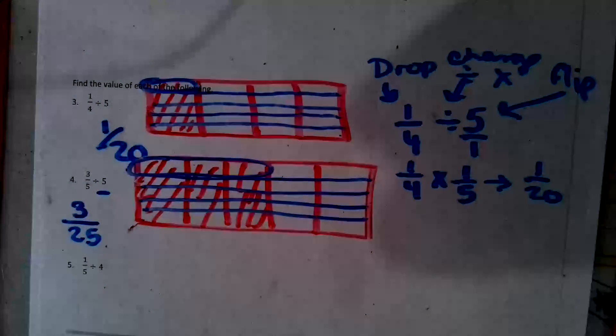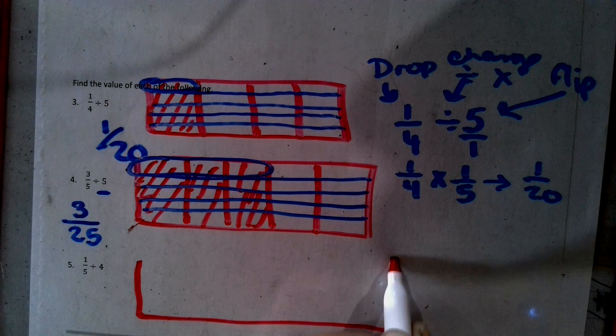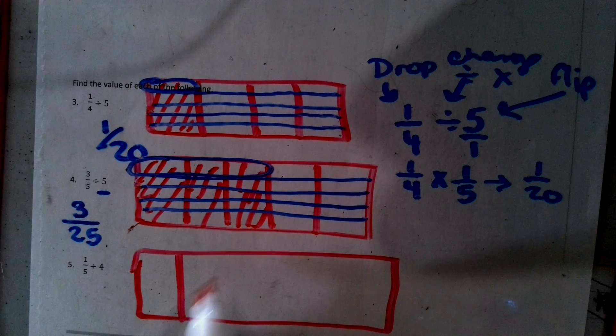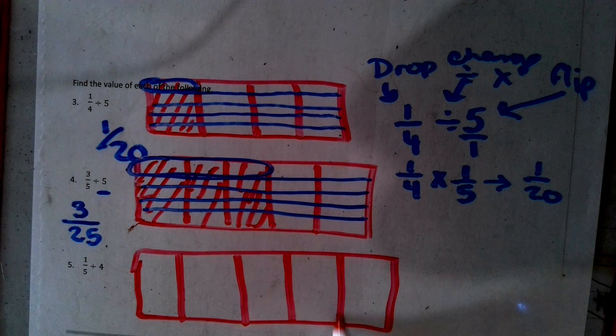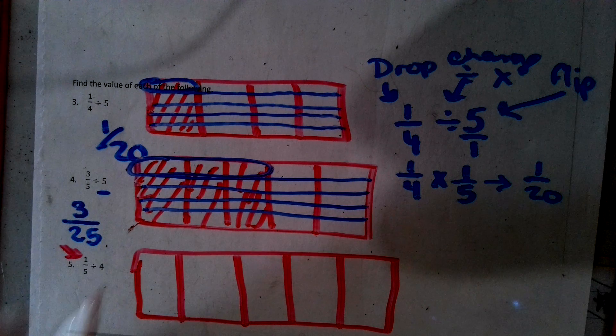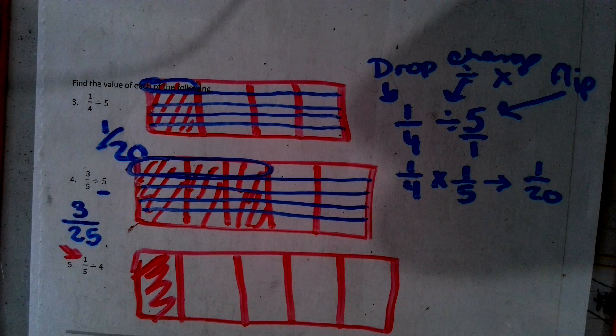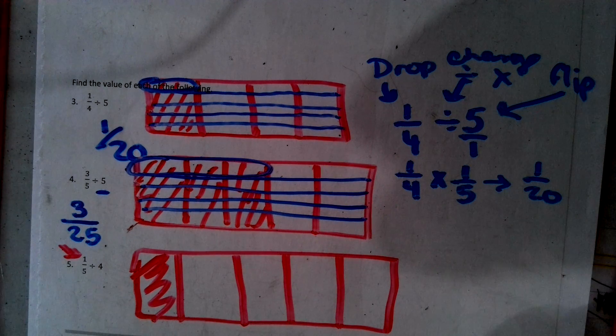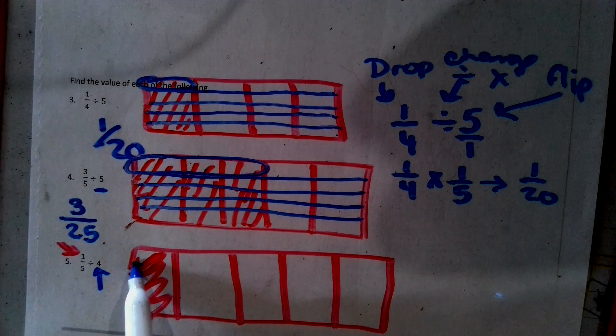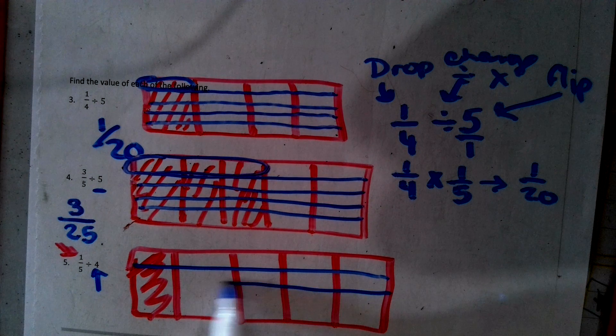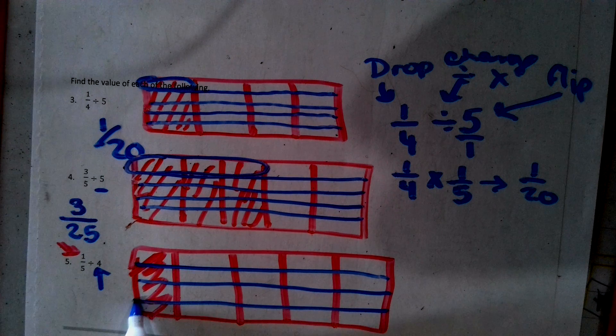Okay. So here we go. 1/5. I have to make a shape with five parts. One, two, three, four, five. I color in one part. I split this into four. One, two, three, four.